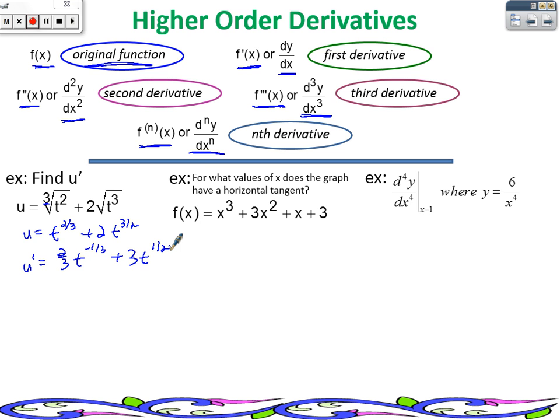and I bring the 3/2 down and multiply it by 2. And I get 3t to the 1/2. And you can just leave it like that. That's fine. It's a negative exponent. If you don't want a negative exponent. Or let's say, we want to turn it back into a radical notation. Let's do that, just for practice. So,